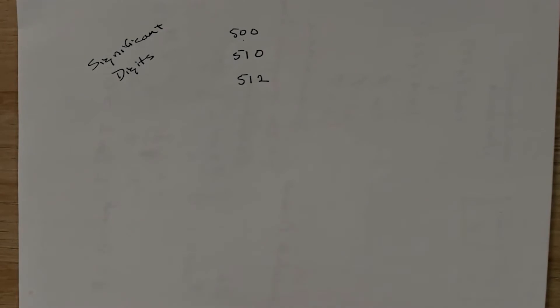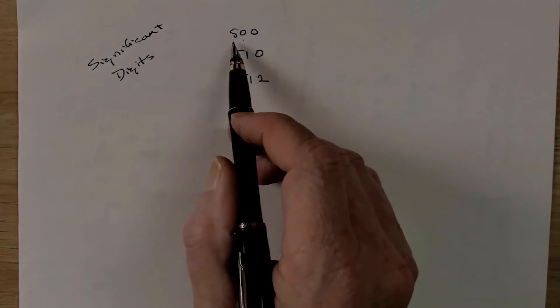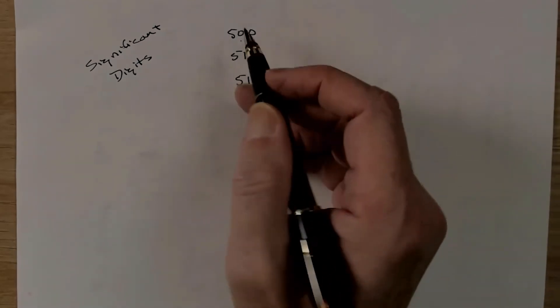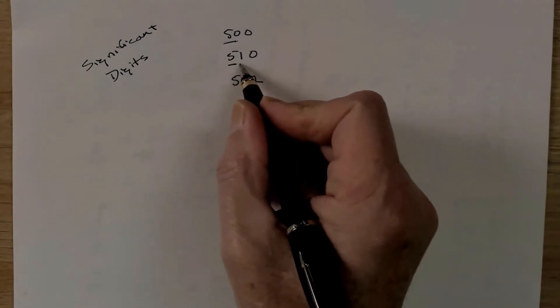So let's talk about significant digits. Significant digits have to do with the accuracy and precision of your number. So say we measure something, and on our first measurement we say it's 500 units long. That's one significant digit. Now we measure it with a little bit better ruler, one that has a little bit more accuracy,